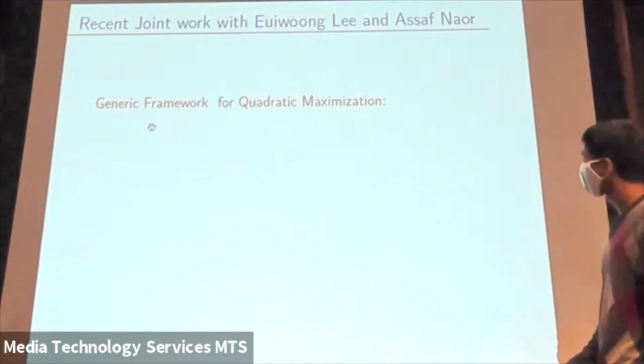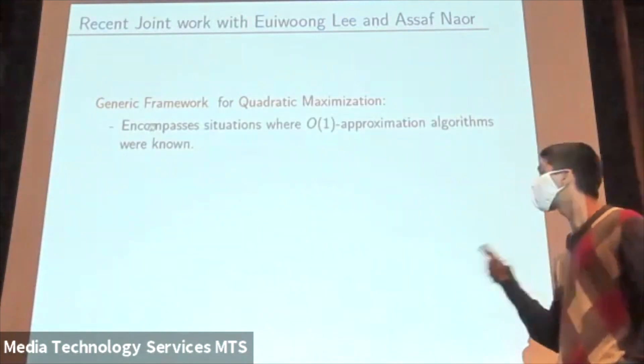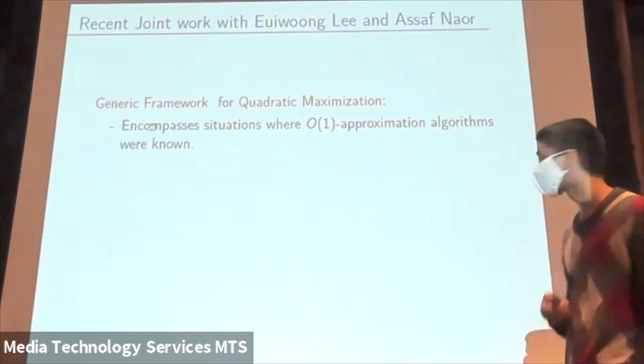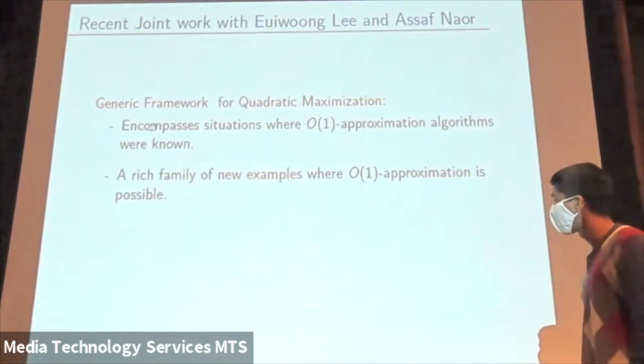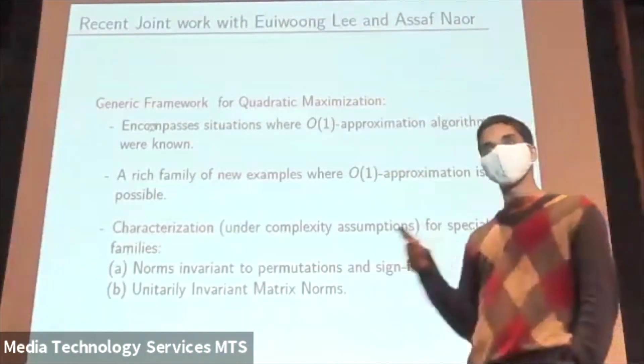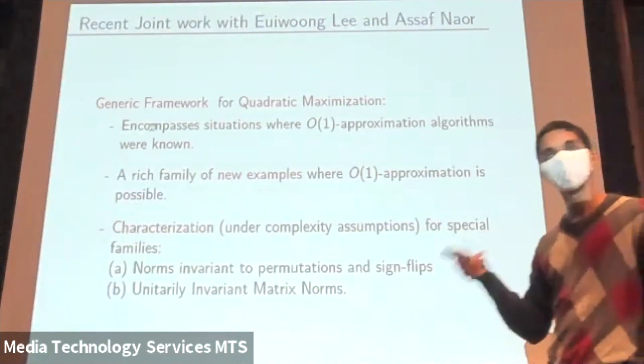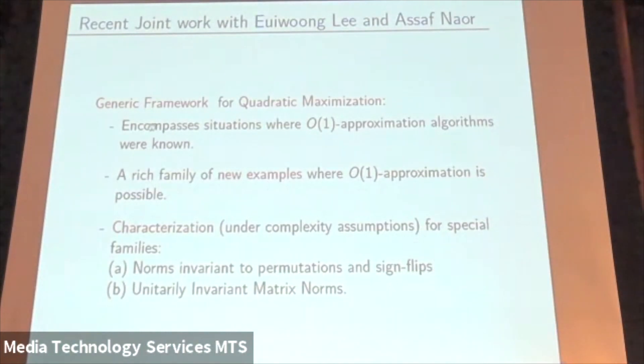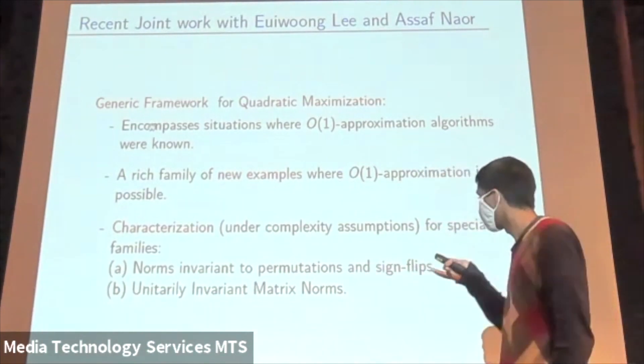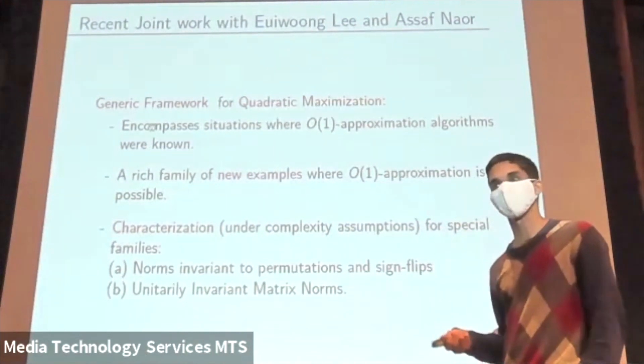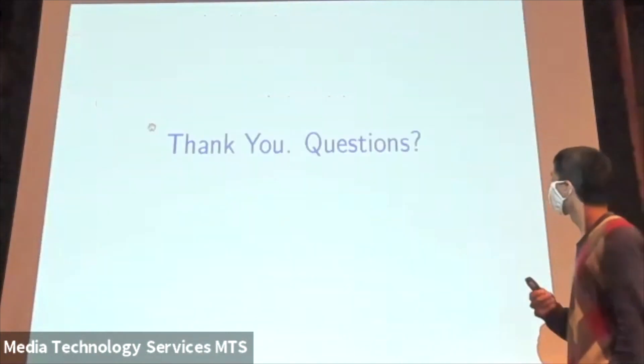In some recent work with Jung Lee and Asaf Hadari, we make some progress towards these questions. Specifically, we give a generic framework for quadratic maximization that has the following features. It encompasses situations where prior constant factor algorithms were known, and it gives some new examples, some new families of examples, where we obtain constant factor approximations. For special classes of norms, we actually obtain a complete categorization. For example, if the norm is symmetric to permutation and flipping signs of the entries. I should conclude. So if the norm is symmetric to permutation and flipping signs, or if the norm is unitary invariant, if it's a unitary invariant matrix norm, we have a characterization. It turns out that it's very closely related to the type two constant of the norm X. That's it. Thank you.